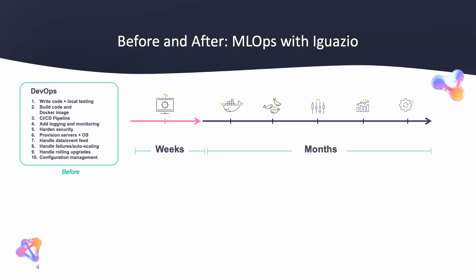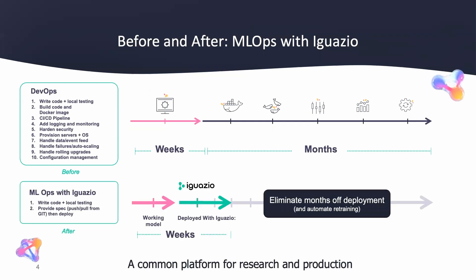Before Iguazio, it may take you a few weeks to develop your model, but it could take up to a few months to actually get it into production. With Iguazio, we're eliminating months off of your deployment time and also automating the retraining process.